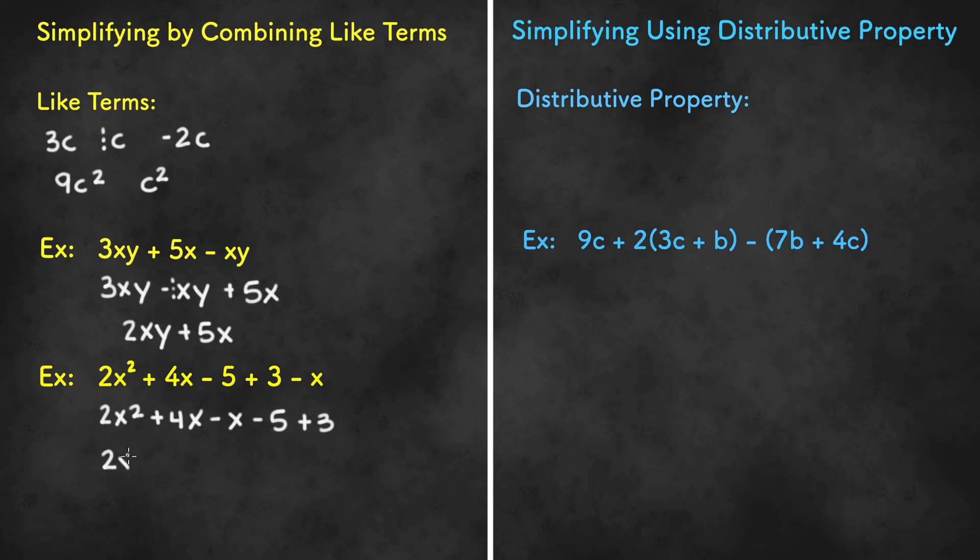We have 2x squared and then we have 4x minus x or 1x. That would be 3x. And then we have negative 5 plus 3, and that's negative 2. And that's the final answer.